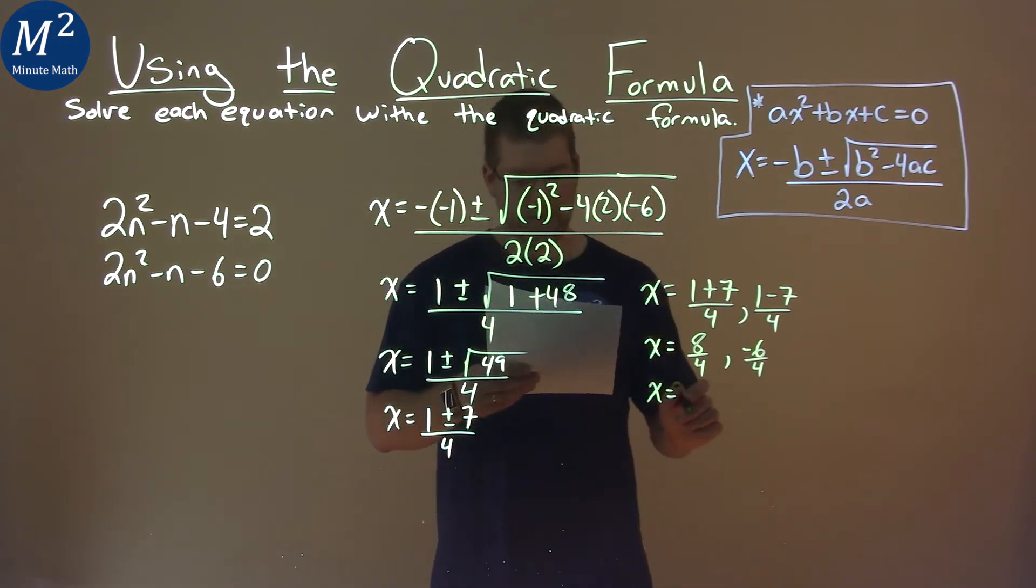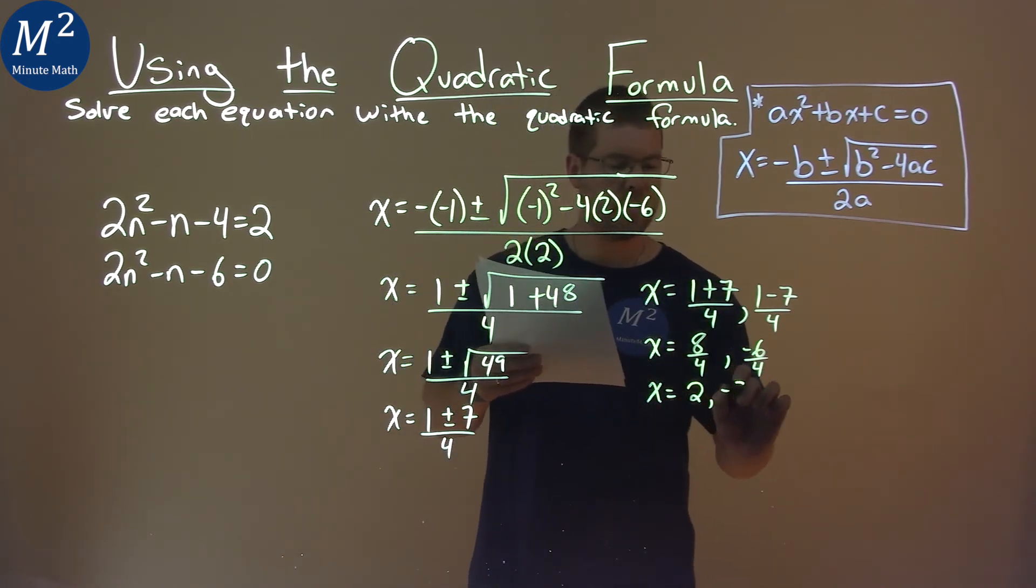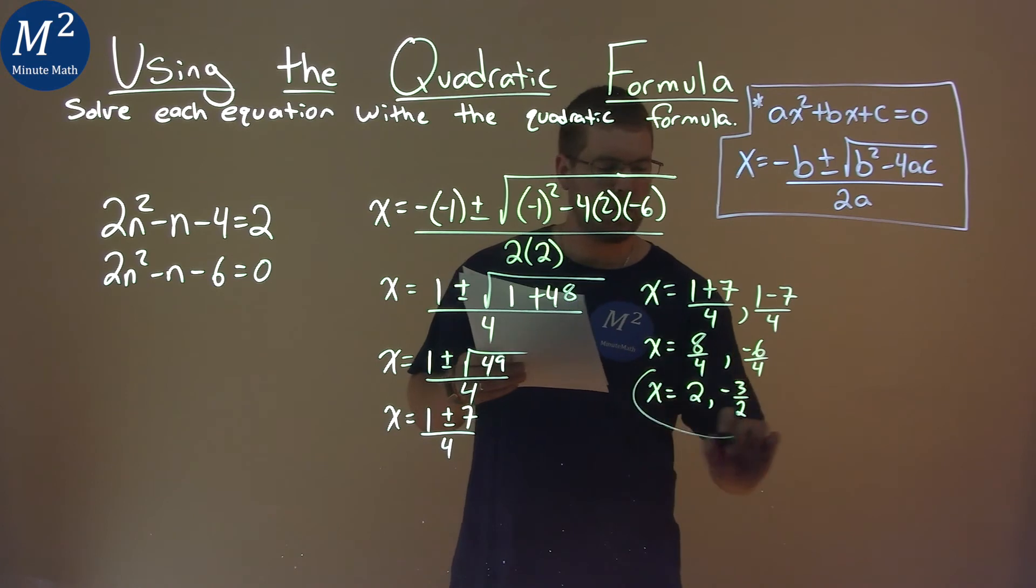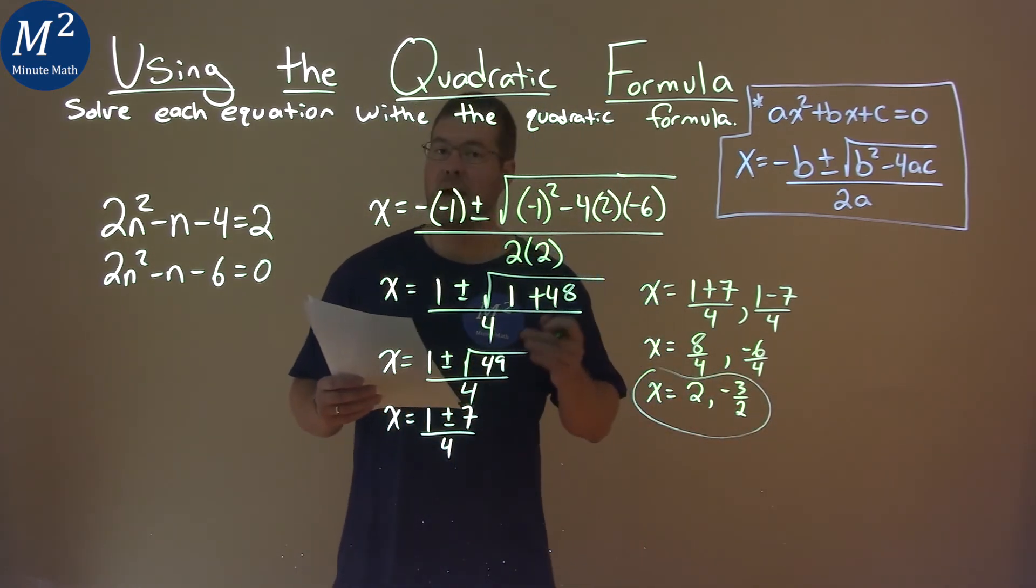Continue on. 8 divided by 4 is 2, and -6 divided by 4 is -3/2. So my two solutions are x = 2 and x = -3/2.